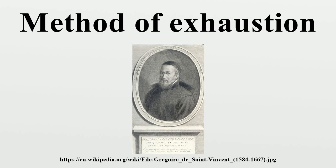The method of exhaustion typically required a form of proof by contradiction, known as reductio ad absurdum. This amounts to finding an area of a region by first comparing it to the area of a second region. The proof involves assuming that the true area is greater than the second area, and then proving that assertion false, and then assuming that it is less than the second area, and proving that assertion false.